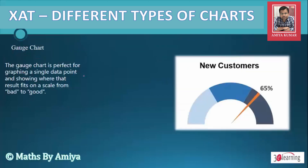The next chart is the Gauss chart. The Gauss chart is perfect for graphing a single data point and showing where that result fits on a scale from bad to good.